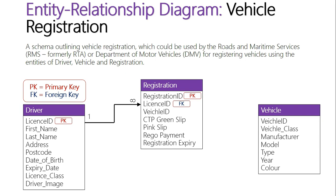Basically, every single driver record can register multiple vehicles — they can make multiple registrations — but every registration is only registered to a single driver. That is why it's one-to-many: one driver can make many registrations, but every registration is only listed to one driver.